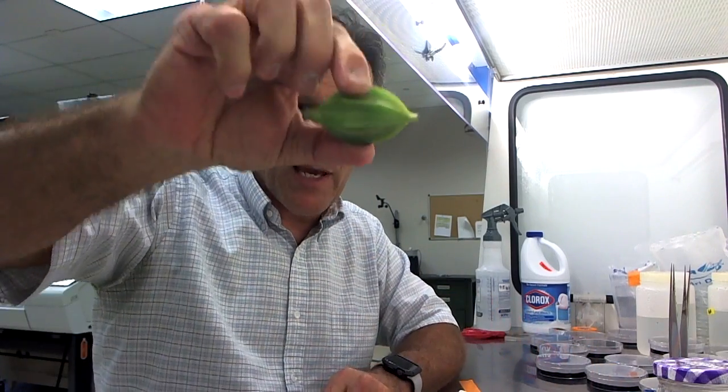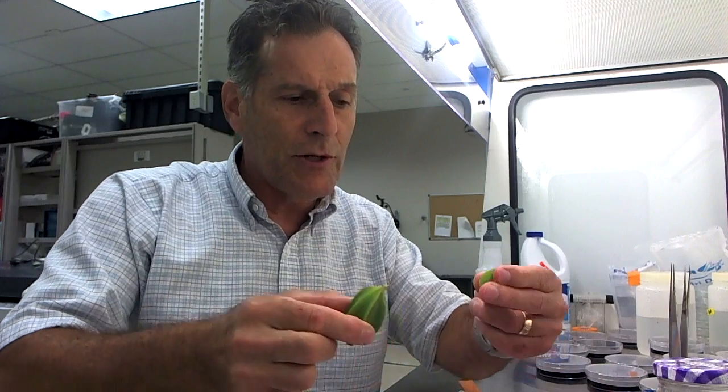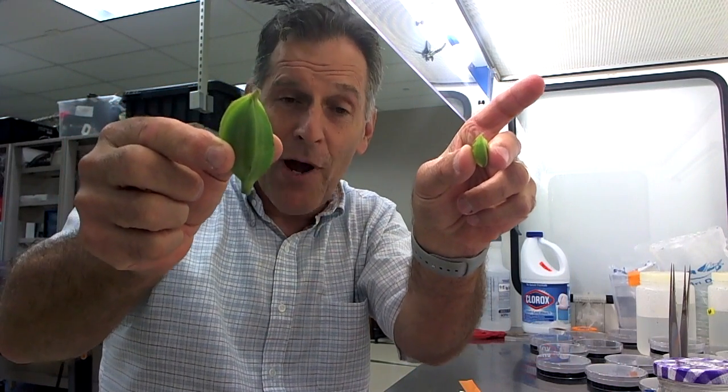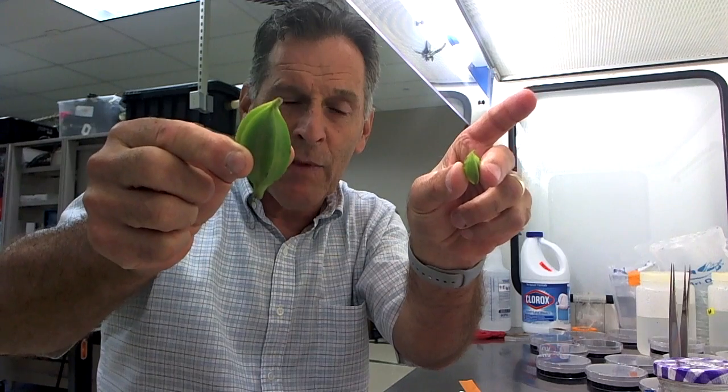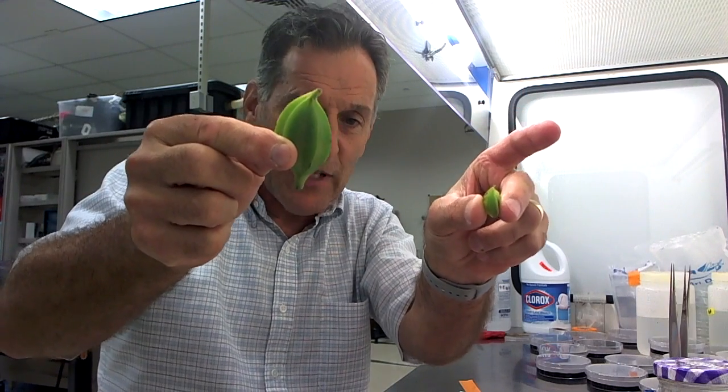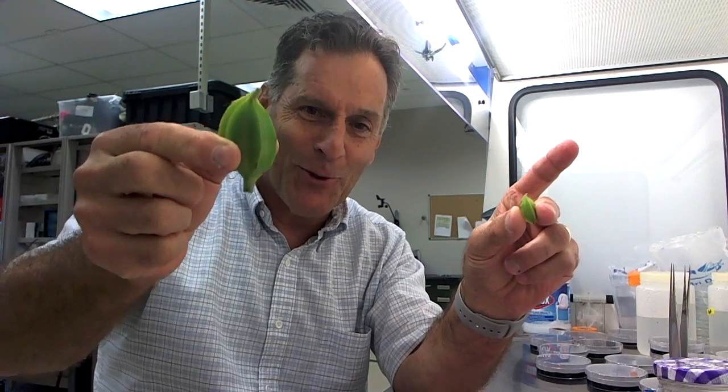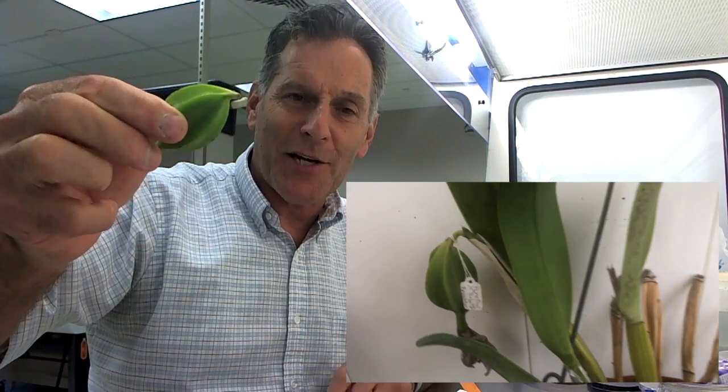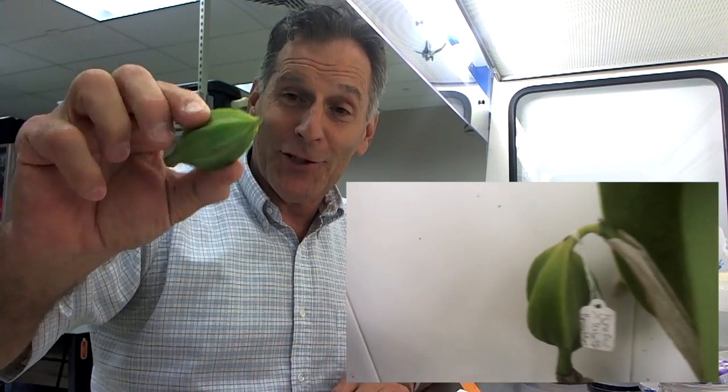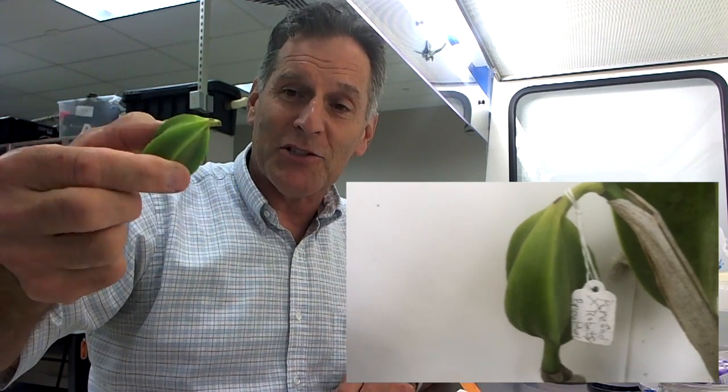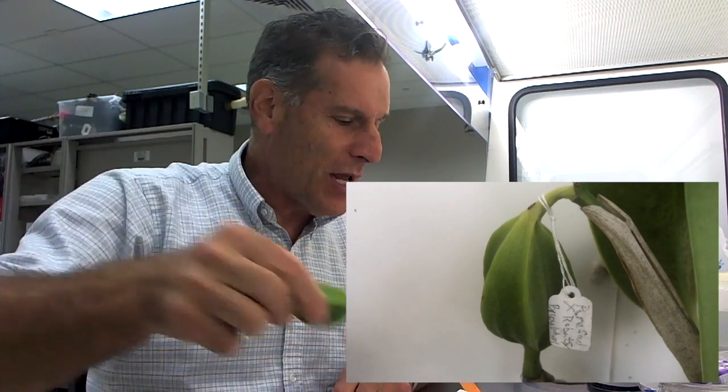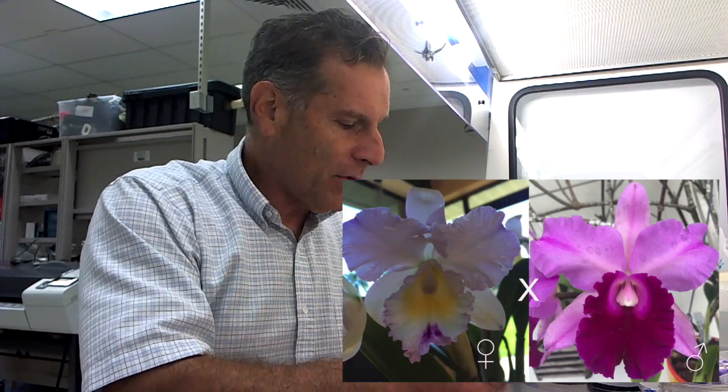The seed capsules: first of all, I have a seed capsule from a cross that I made. This is from a cross I made right here, and this is another seed capsule that was provided to me. There may be fewer seeds in this capsule than this one. This is from a cross I made, a Cattleya cross, and it should give me a lot of seeds. It's been about six months since I pollinated, so this guy should be ready to go.